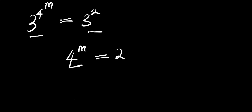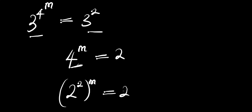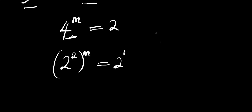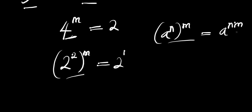So what do we do at this point? Let's express this 4 as an exponent of 2: that means we have 2 to the power of 2, all to the power of m, and this equals 2 to the power of 1. Using the identity that (a^n)^m equals a^(n times m), we multiply the exponents to get 2 to the power of 2m equals 2 to the power of 1.